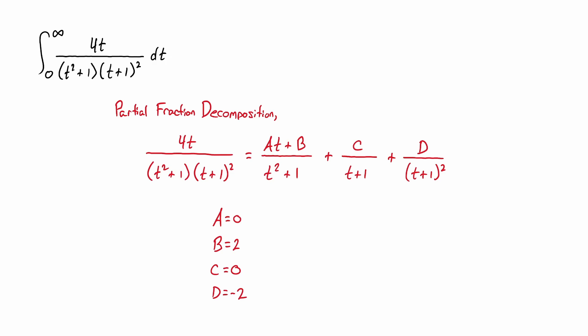If we plug in the values for a, b, c, and d, we get the integral now going from 0 to infinity. But now we have two fractions left over. Here we have 2 divided by t squared plus 1, and then minus 2 divided by t plus 1 squared.